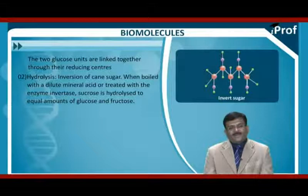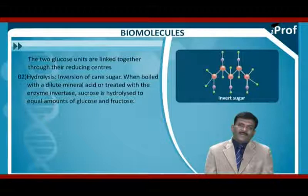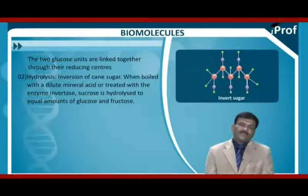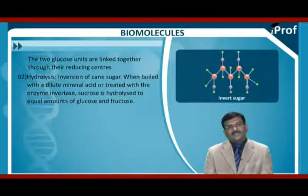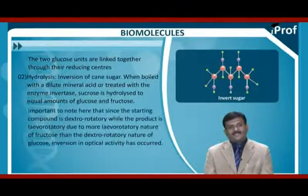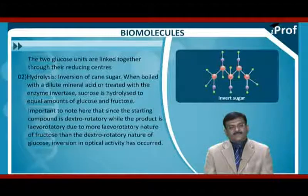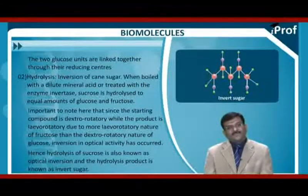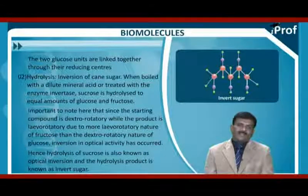Hydrolysis — the inversion of cane sugar. When boiled with dilute mineral acids or treated with the enzyme invertase, sucrose is hydrolyzed to equal amounts of glucose and fructose: C12H22O11 + H2O → C6H12O6 + C6H12O6. Note that the starting compound sucrose is dextrorotatory, while the product mixture of glucose and fructose is levorotatory. This is due to the more levorotatory nature of fructose than the dextrorotatory nature of glucose. Hence, hydrolysis of sucrose is also known as optical inversion, and the hydrolysis product is known as invert sugar.